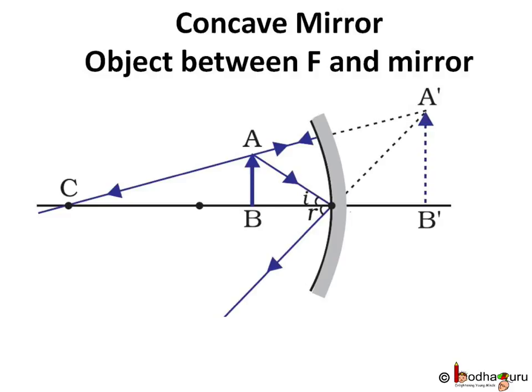A concave mirror generally creates an inverted real image, unless the object is very close to the mirror—that is, before the focal point. In that case only, a concave mirror creates an enlarged, upright, and virtual image. See, the object is so close that the rays don't get the opportunity to converge at a point.